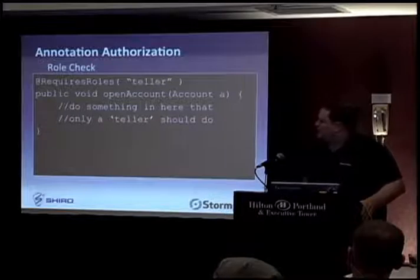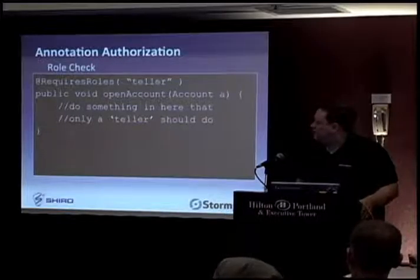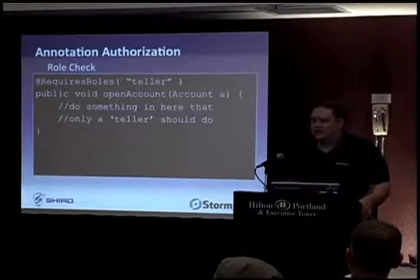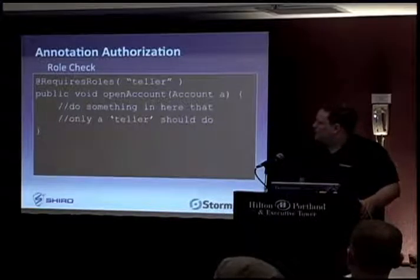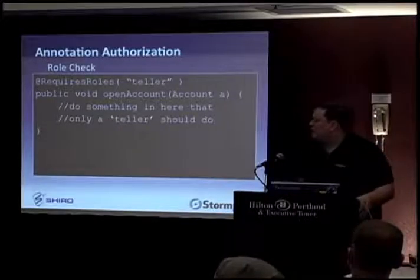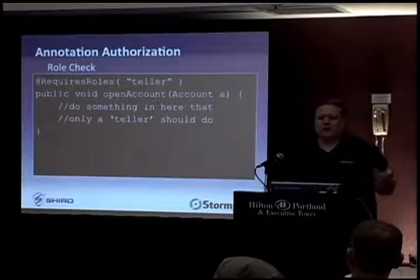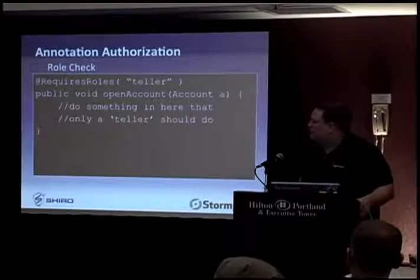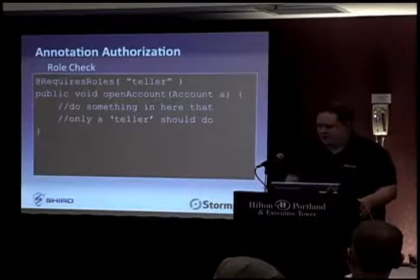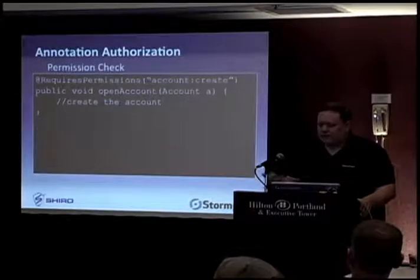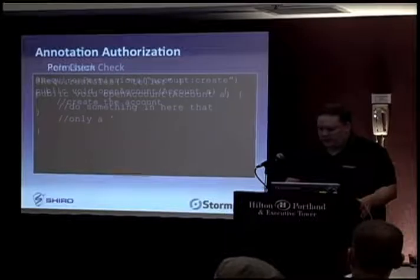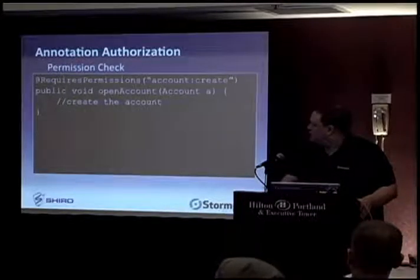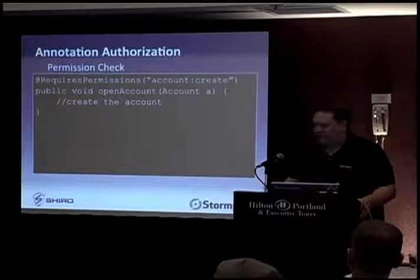There are also annotation checks. In this example, maybe I want to open an account, but the only people who should be able to do that are those in the teller role. If code executes and the current subject does not have the teller role, this method won't ever be invoked — an authorization exception will be thrown, and a transaction would be rolled back. Similarly, there's also an annotation for permission checks — you can have a comma-delimited list of one or more permissions to make sure the current subject is permitted to do these things before the method is executed.